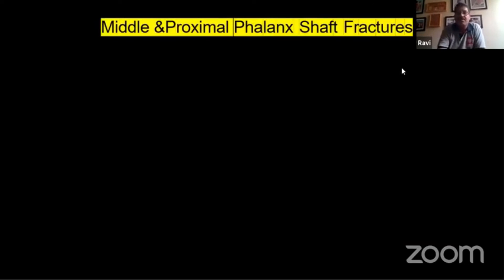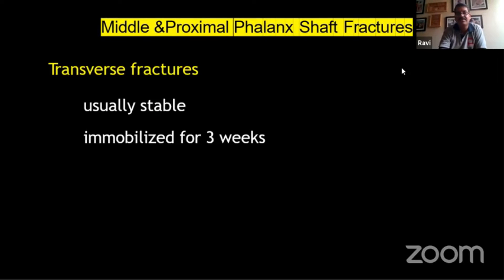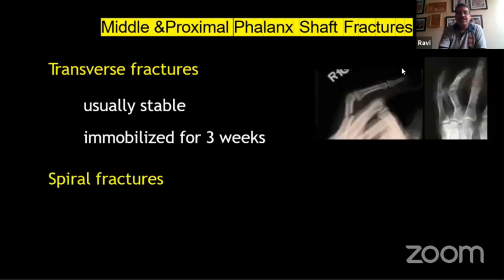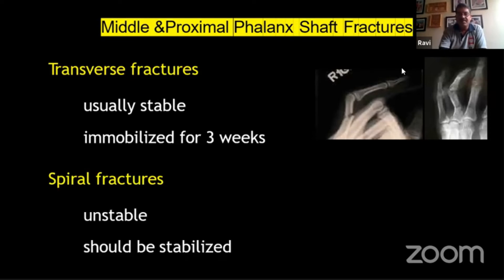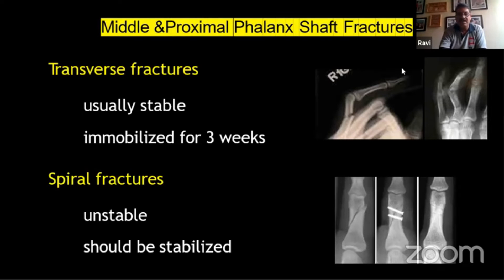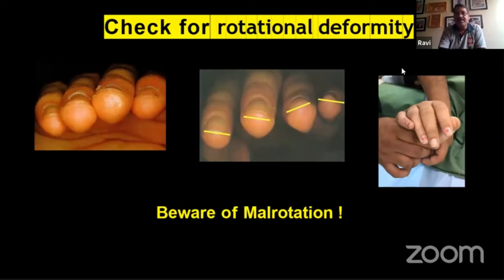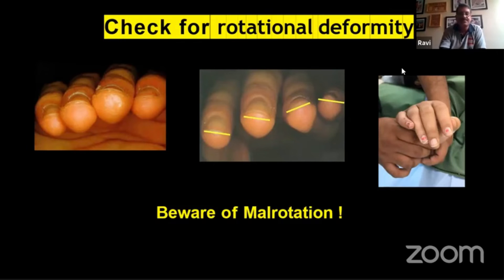For middle and proximal phalanx shaft fractures, transverse fractures are usually stable and can be immobilized for three weeks in a splint of your choice. Spiral fractures tend to displace as they're unstable and should be stabilized, preferably by internal or dynamic traction fixation. One should check for rotational deformities — sometimes subtle, detectable only by looking at the direction of fingernails. Extra-articular fractures can be fixed with K-wires; the important principles are to maintain length, alignment, and rotation. One should bear in mind the safe zones for K-wire insertion to avoid impaling important ligaments or muscles.